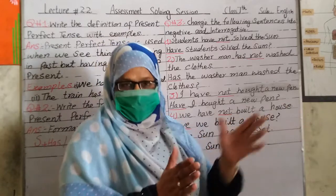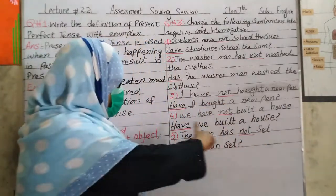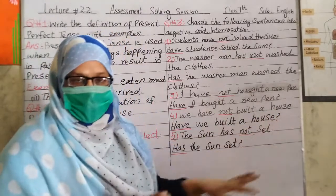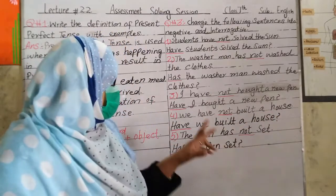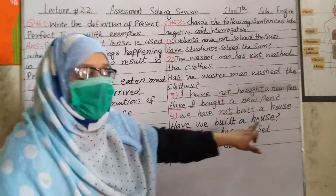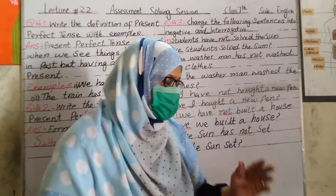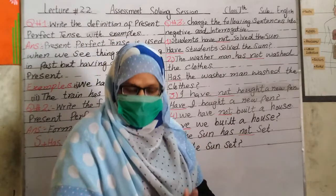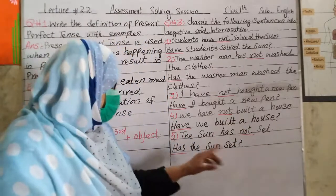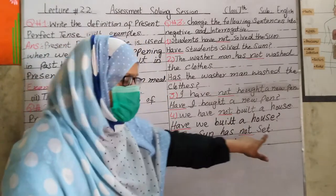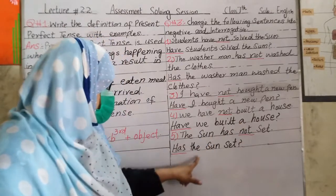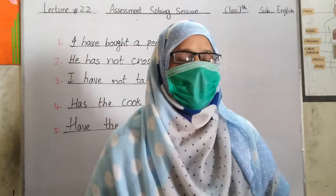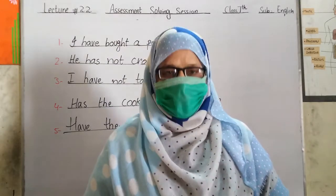Sentence 4: 'We have built a house.' Negative: 'We have not built a house' — ہم نے گھر تعمیر نہیں کیا۔ Interrogative: 'Have we built a house?' Last sentence: 'The sun has set.' Negative: 'The sun has not set.' Interrogative: 'Has the sun set?'